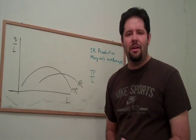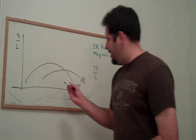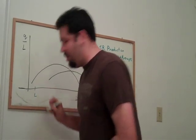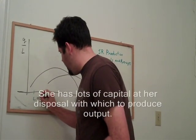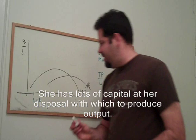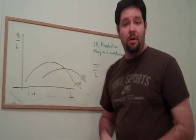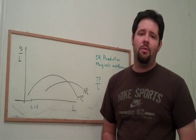So, let's consider marginal product. And let's think about a worker who shows up to work with a bunch of machines all by herself. She's got three or four computers, and she can be pretty productive, but she has no one else to work with.